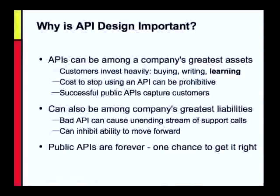Similarly, a bad API can be among a company's greatest liabilities. A bad API can cause an unending stream of support calls because people cannot make the thing do what it ought to do. It can inhibit a company's ability to move forward, because once you have a bad API, you cannot change it at will — you're pretty much stuck with it forever. You have one chance to get it right, and you want to learn how to make APIs that will stand the test of time.